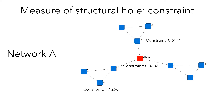Who are the most constrained nodes in network A? Node 1, 2, 4, 6, 8, and 9. They all have the same value of constraint — 1.1250. They are all constrained in a single cluster and have no other information source. The constrained value of node 3, 5, and 7 is 0.6111, meaning they play a brokerage role between Abby and the cluster they belong to. Node 3, 5, and 7 fill structural holes in the network to some extent, but their brokerage role is not as strong as Abby's. To build your social network, you should aim for a low value of constraint.